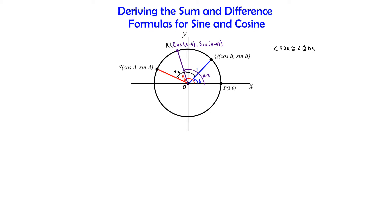Now if those angles are congruent to each other, then chord RP should be congruent to chord QS. If their angles are congruent, then the chords should also be congruent. And if they are congruent, then their measures should be equal. So now we know the measure of RP is equal to the measure of QS.